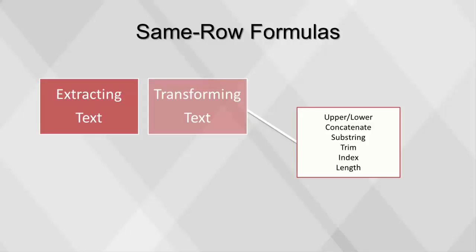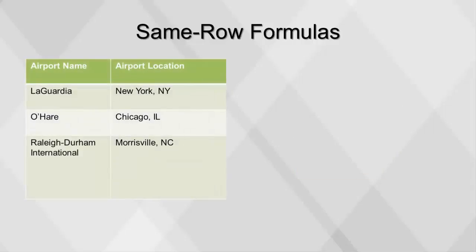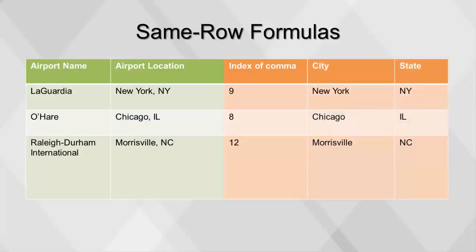To extract city and state from the airport location field, we would need to extract all the text before the comma as the city field, and everything after the comma and space as the state field. To do this, we need two functions: index and substring. The index function will help us identify the location of the comma in the text field, counting from the left, including spaces. This is done because the comma is not always in the same location. Then we use the substring function to extract everything before the comma as the formula for the city field, and extract everything after the comma and space for the state field. To get the city and state columns back into the format of the original field, we would use a concatenate function.